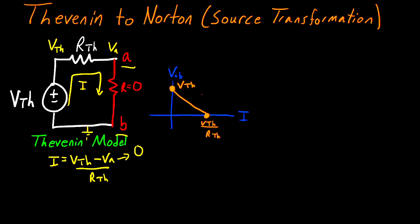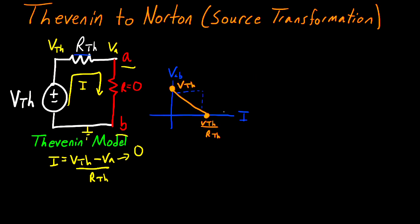This line represents the behavior of my model. Let's look at the slope of this line — the slope is rise over run. The rise is negative V_Thevenin, and the run goes from zero to V_Thevenin divided by R_Thevenin, so the slope ends up being equal to negative R_Thevenin. So the slope of this line is actually the negative of this resistor value. If we can create a circuit with the same behavior, we can say that's an equivalent model.